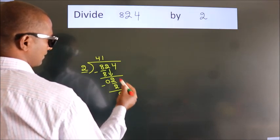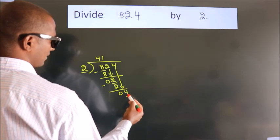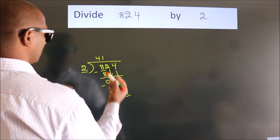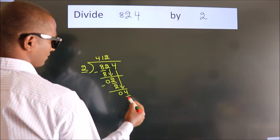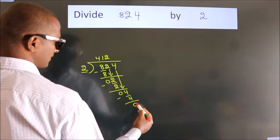After this, bring down the beside number. So 4 down, so 4. When do we get 4? In 2 table, 2 twos, 4. Now we subtract, we get 0.